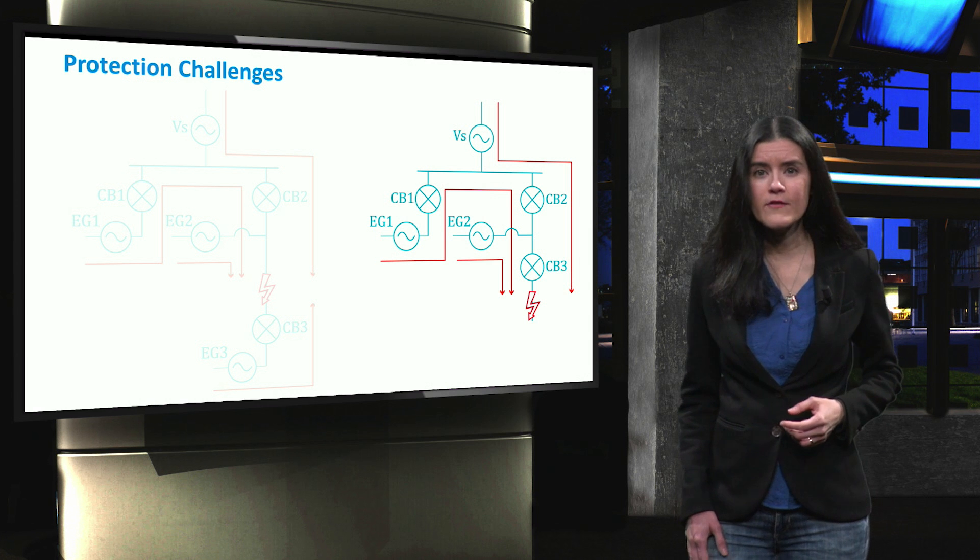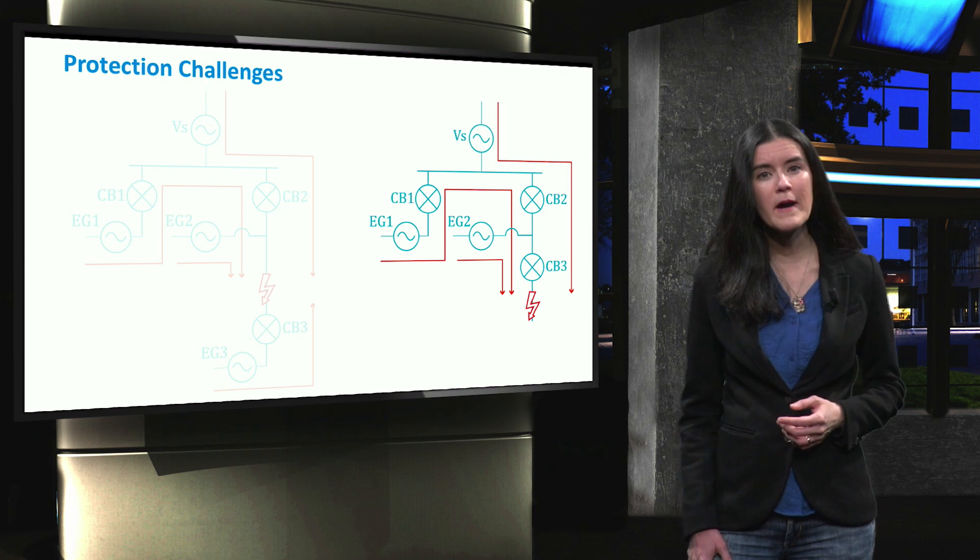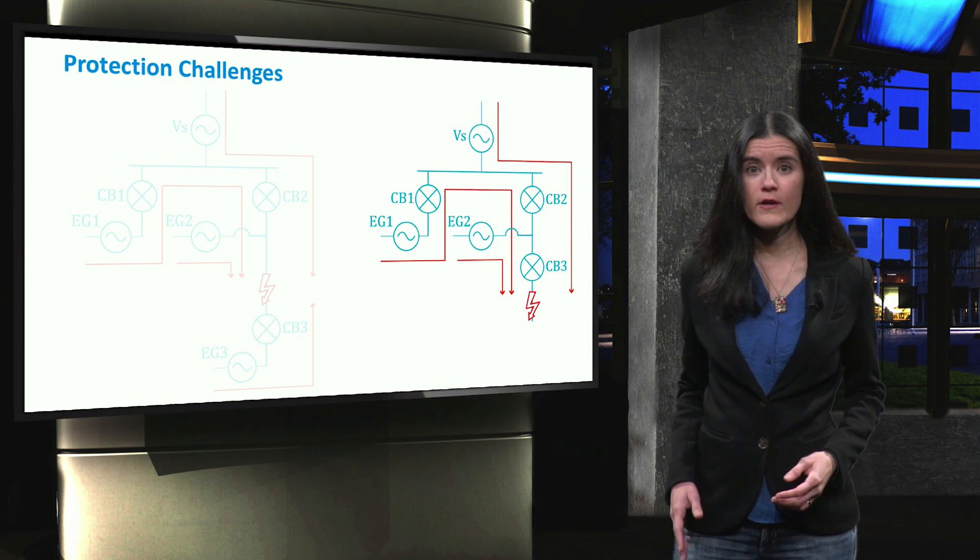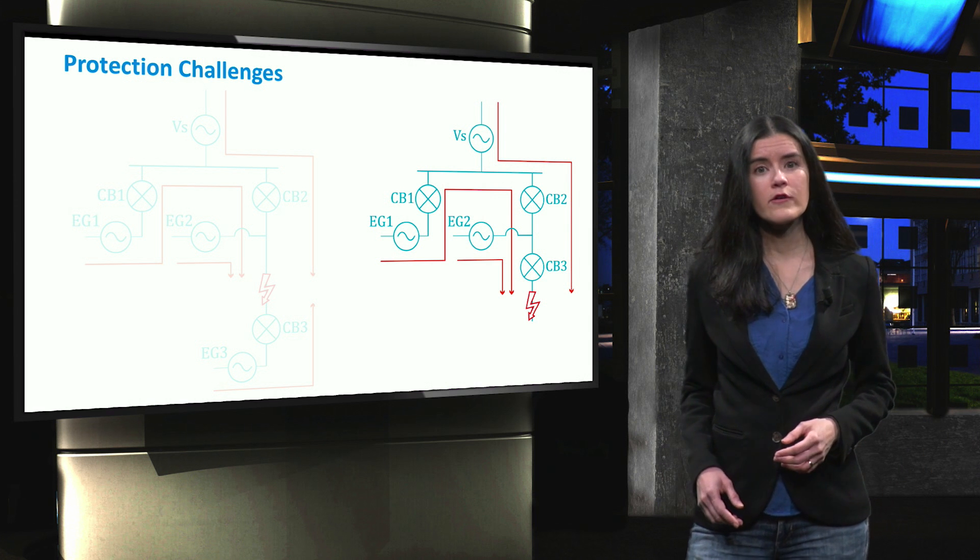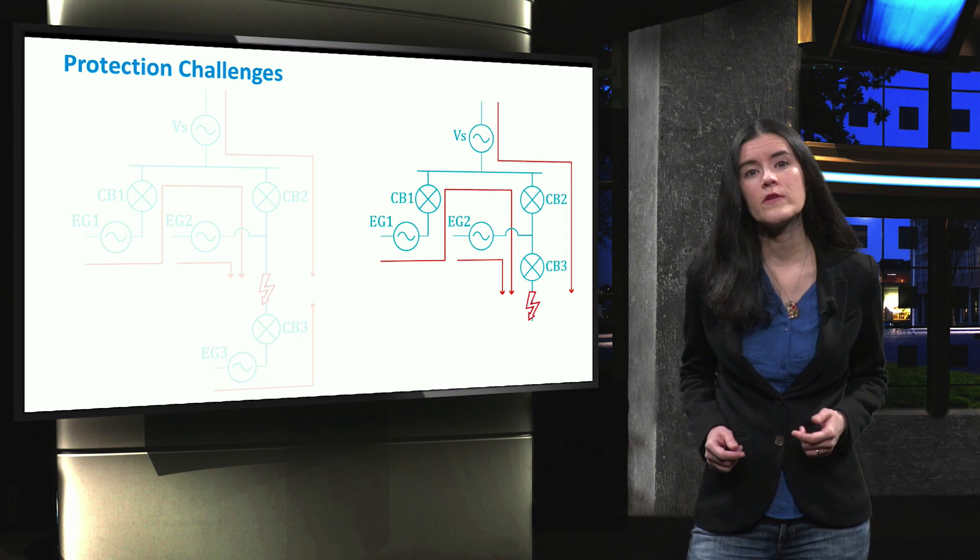Additionally, the difference in the level of fault current during grid-connected and islanded operation is challenging for microgrid operation. In the grid-connected mode, the level of fault current is high due to both the external grid and the distributed generators.